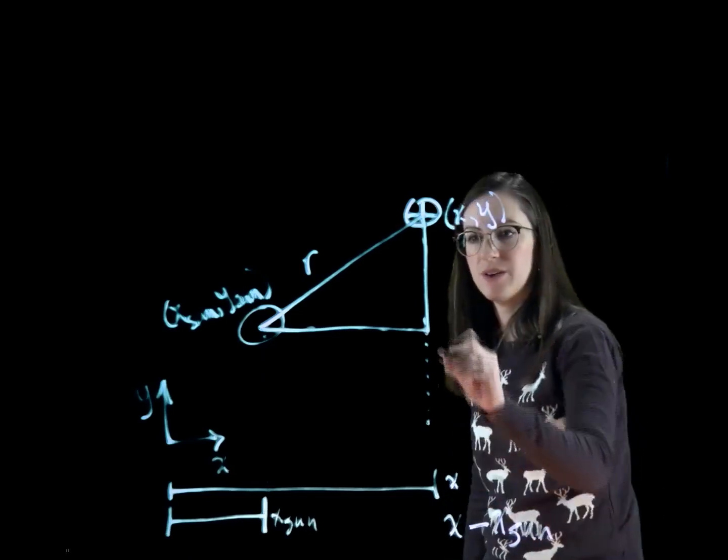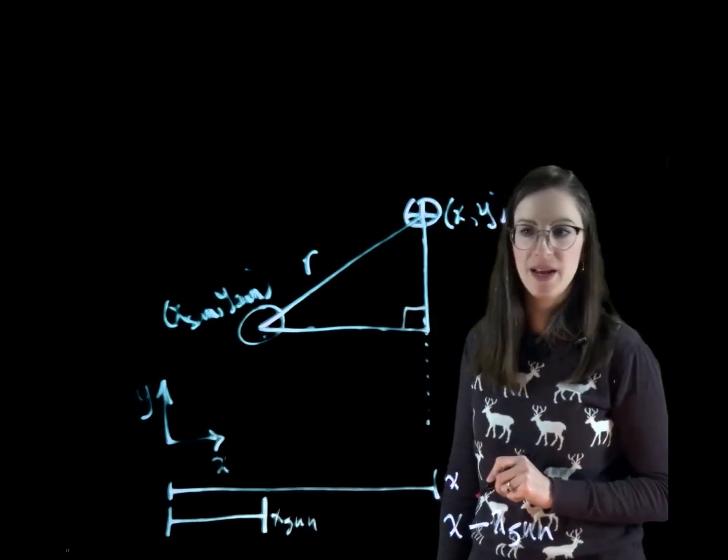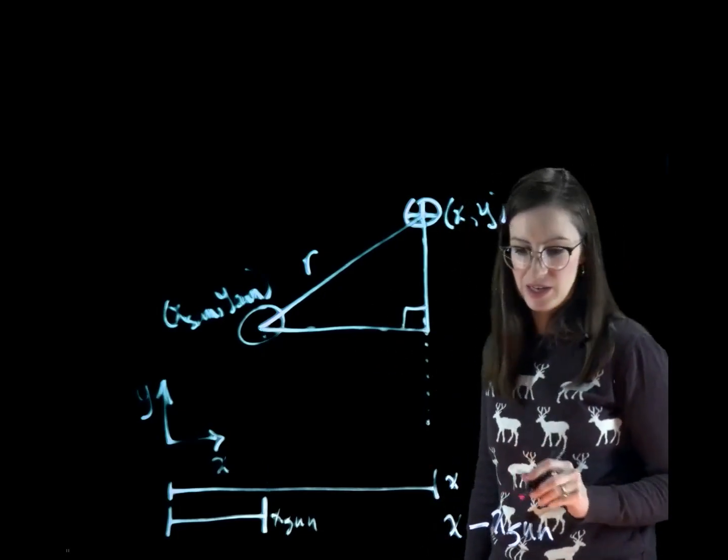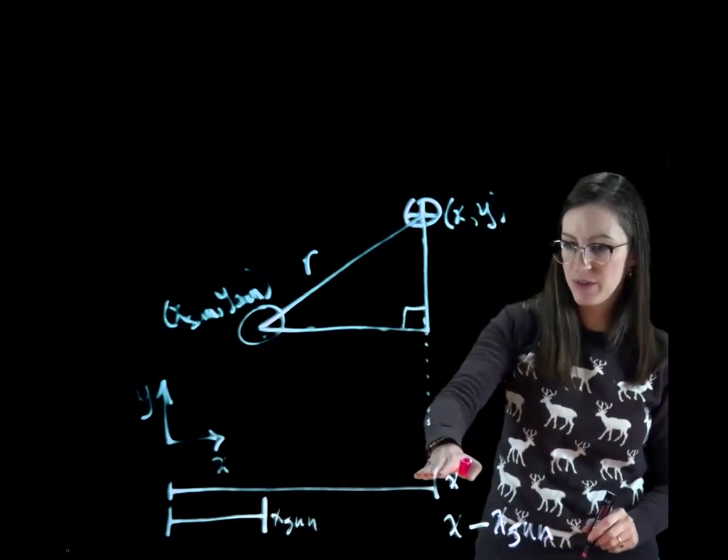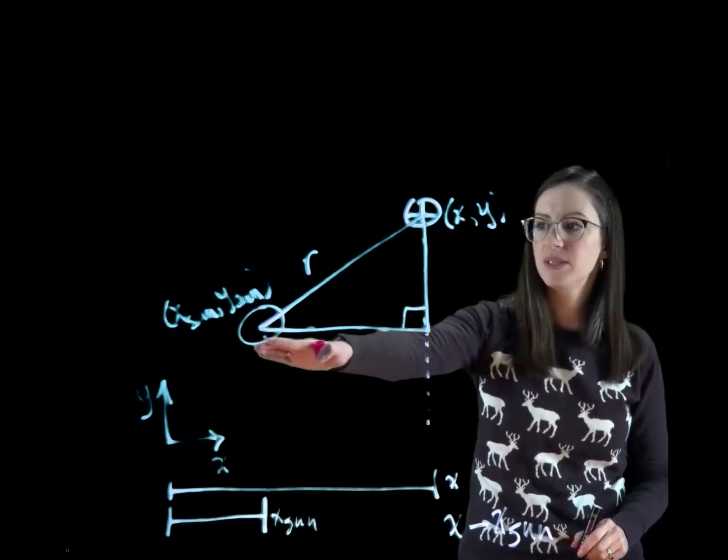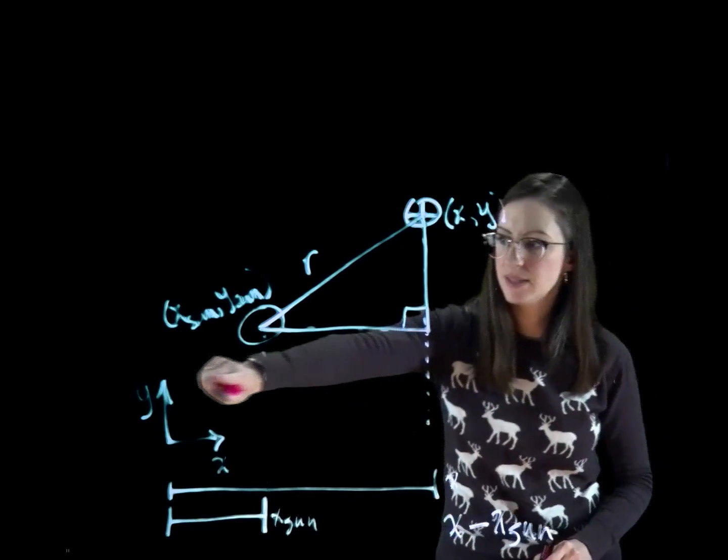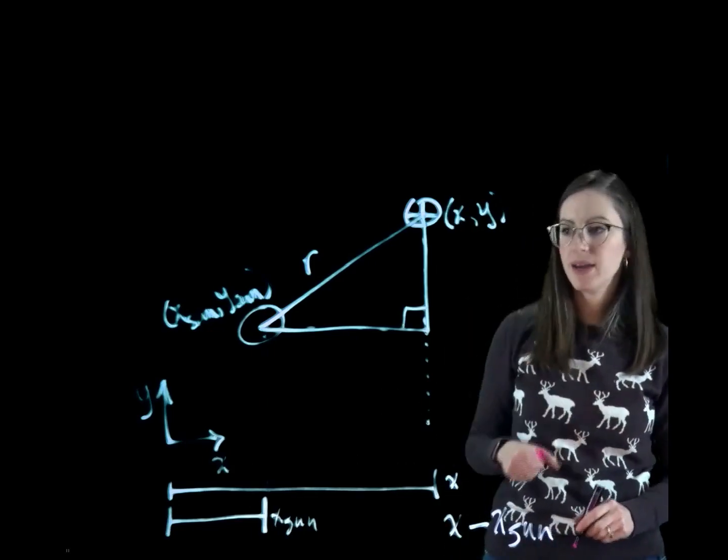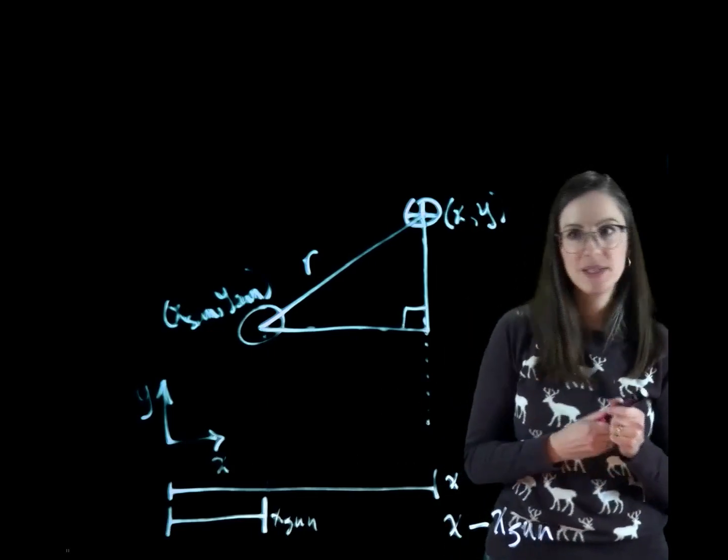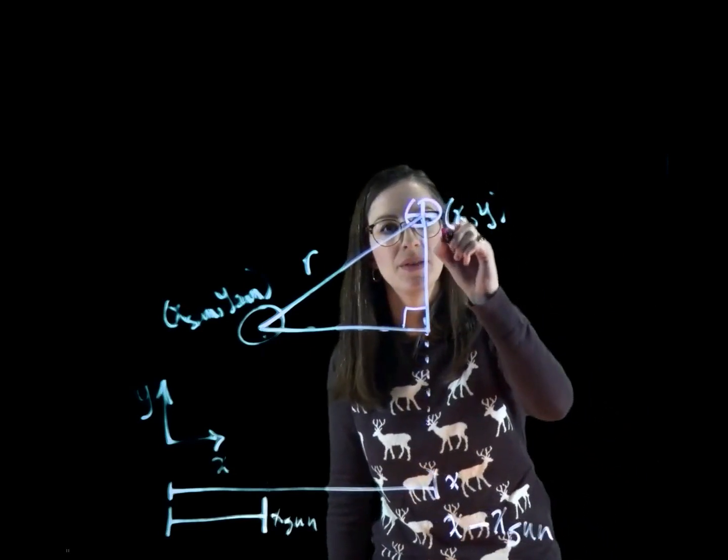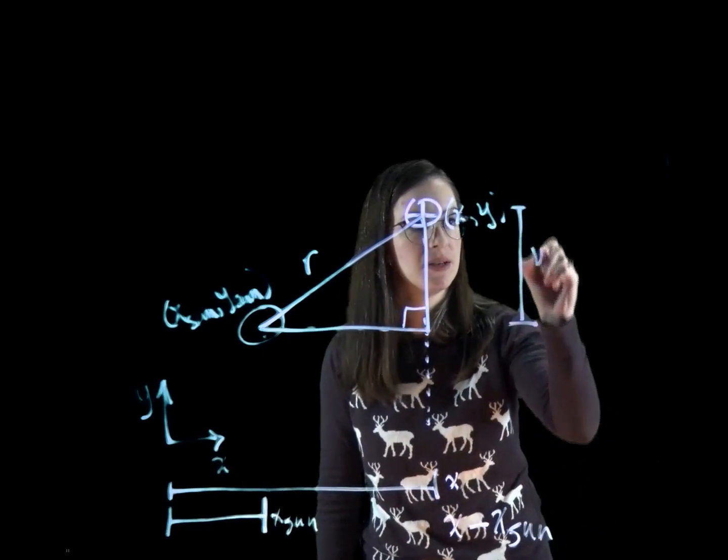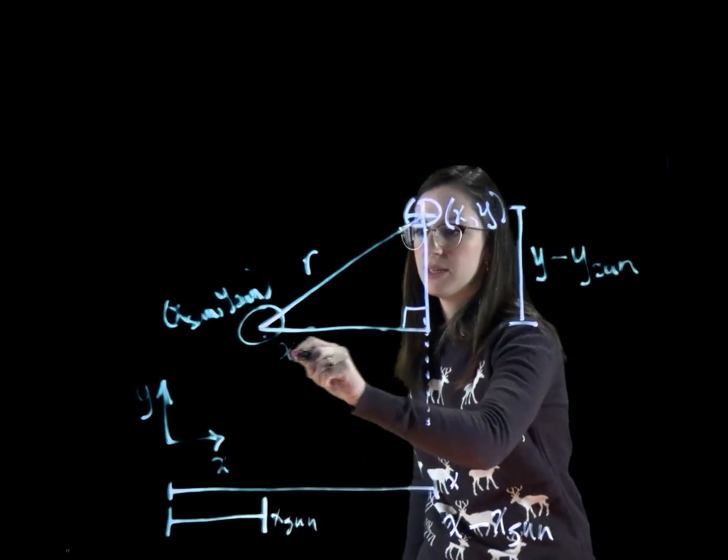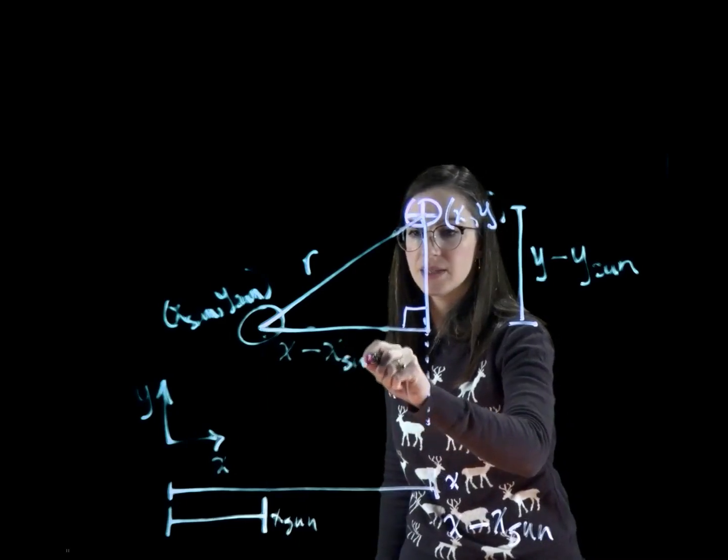And I forgot to just clarify that this is a right angle there. So this is a right triangle, our 90 degrees. So I hope I've shown you that this length here is the x minus x sun. And you can do the same thing with the y-axis, and you'll get y minus y sun. I'll just write that up here. That this distance is y minus y sun, and this distance is x minus x sun.